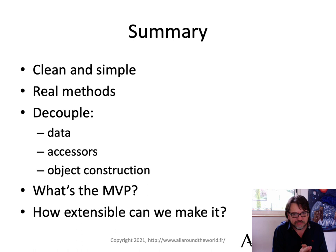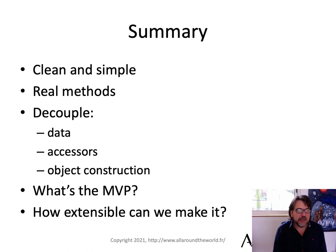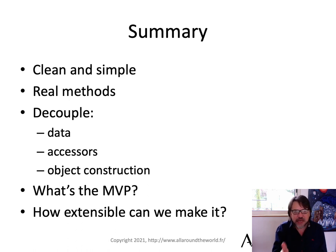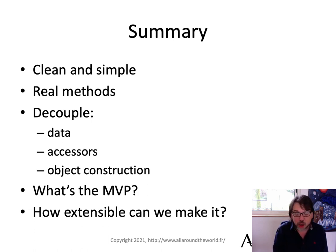So Cor is clean and simple. You get real methods with Cor, not subroutines that have self passed as the first argument — they'll be marked as methods internally, which means the MOP can understand if you're trying to call a method and not accidentally call a subroutine with the same name. We're decoupling the data, accessors, and object construction, which makes it much easier to understand and build. We don't know what the MVP is — we're still working on that — and there's a lot more work to do. But it is there, and I'm absolutely delighted about that.